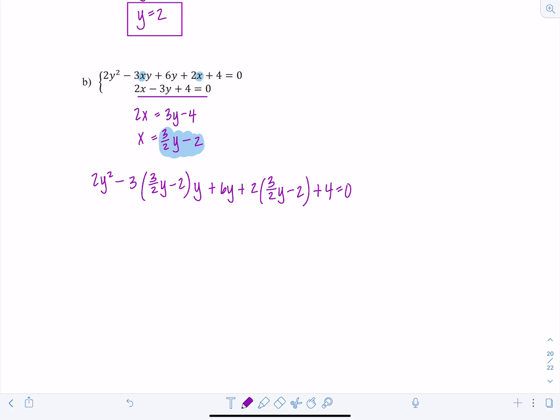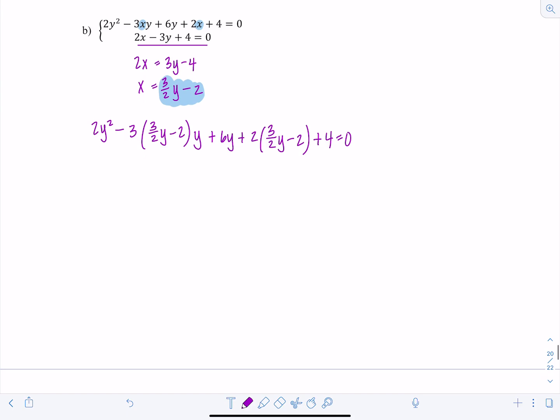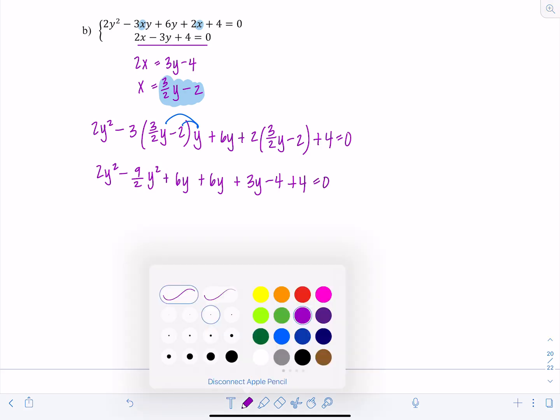Not the cutest equation you've ever run into, but it is doable. So let's start distributing. We have 2y squared minus 9 halves, let's distribute that while we're at it too. We're in pre-calc now, we can do this all at once. Minus 9 halves y squared, then this is going to be plus 6y, then I have another plus 6y, plus 3y minus 4 plus 4 is 0. So let's see what happens. The 4s are gone.